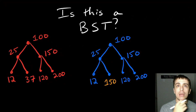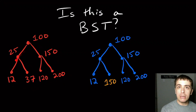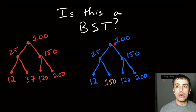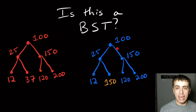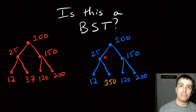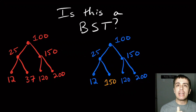The answer is that the left one is a binary search tree and the right one is not. The 25 node is okay because everything to its left is smaller and everything to its right is bigger. The 100 node is where things get wonky — everything to the right of it is bigger than 100, so that's okay, but everything to the left is not smaller than 100 because of this node 150, which is bigger than 100 but is supposed to be smaller.